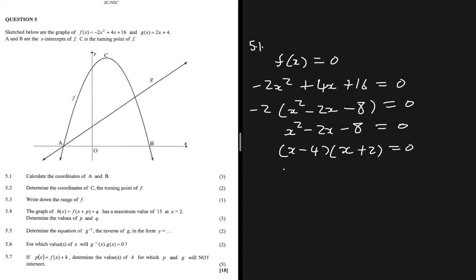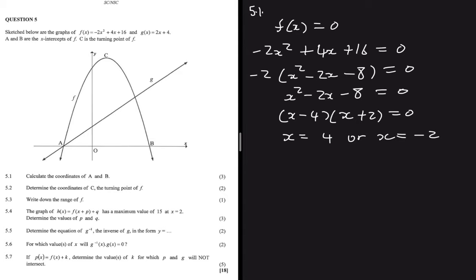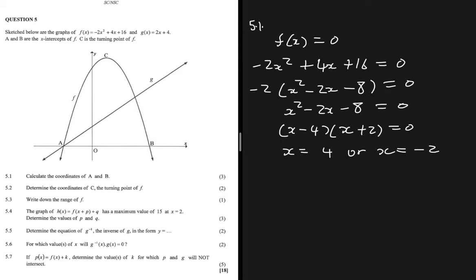From the factored equation, x = 4 or x = -2. Since the y-value at an x-intercept is 0, the coordinates are B = (4, 0) and A = (-2, 0). We can confirm from the graph that A is to the left of the y-axis (x < 0) and B is to the right (x > 0).